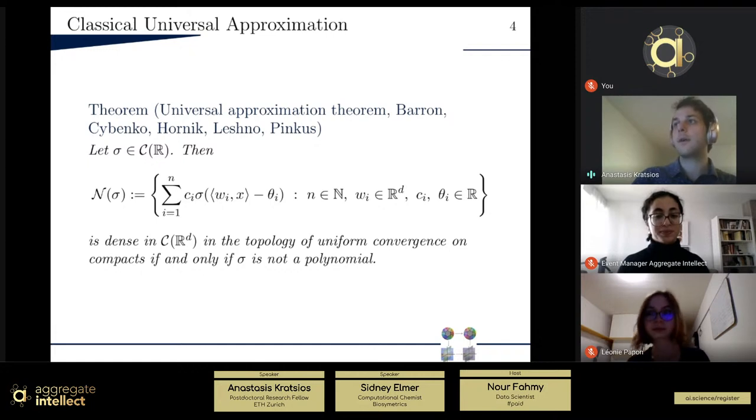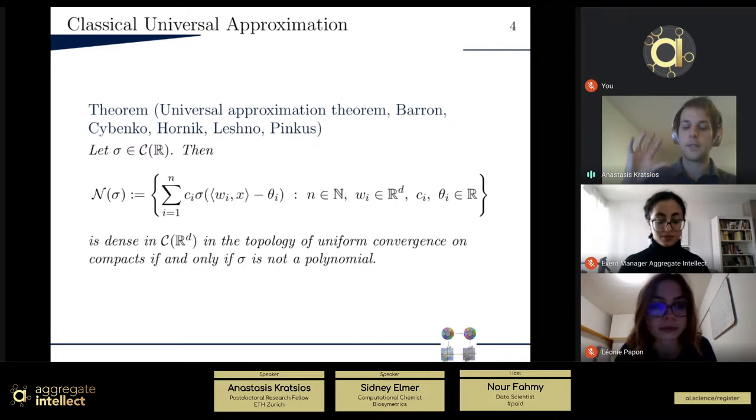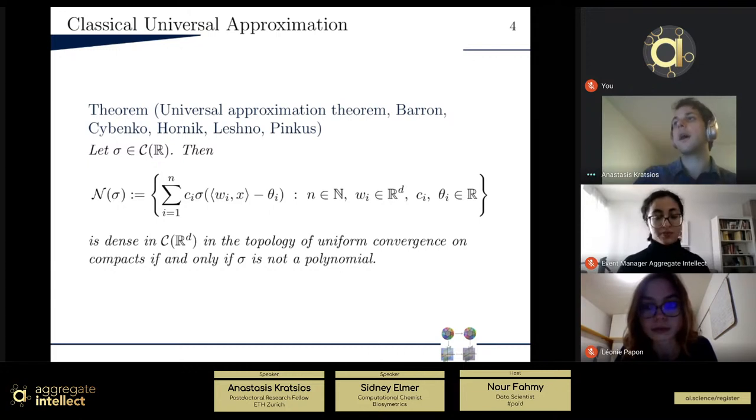And basically what that says, you have the shallow version, so this is more or less in the 90s. It says, if you consider this class of functions, which you could just basically understand as applying an affine transformation, then component-wise to that output of that transformation, this nonlinear sigma, that's this continuous function of certain type, and then you apply another affine transformation. This class is then able to approximate any continuous function to arbitrary precision on a given compact sort of subset of the input space.